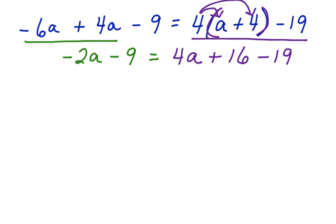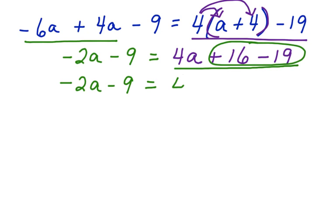Now on the left side of the equation, there's nothing else we can do right now. So let's bring down the negative 2a minus 9 equals. Look at the right side of the equation. We can combine like terms right here. 16 minus 19 is negative 3. So we bring down the 4a minus 3.